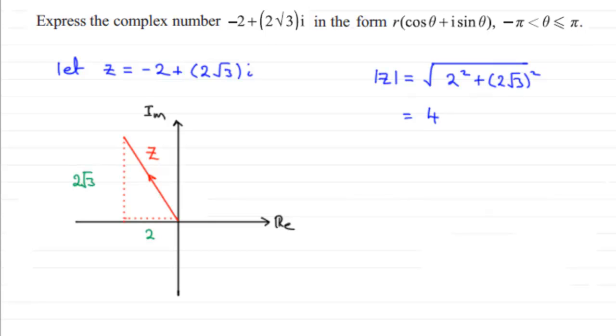Next we need the arg of the complex number Z and that will be this angle round here. This will be the arg of Z. And to work that out what I'm going to do is work out what this acute angle is in here. I'm going to call it theta.